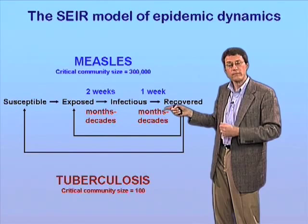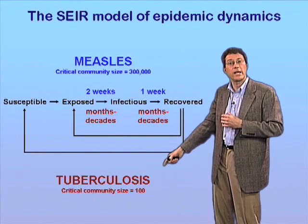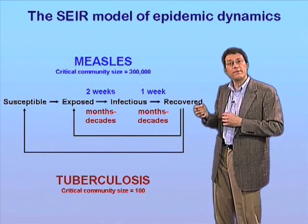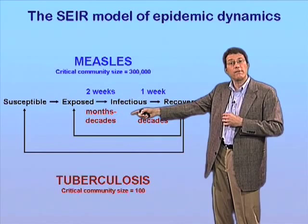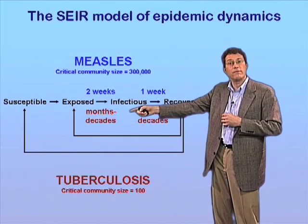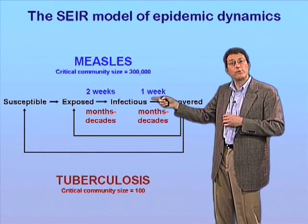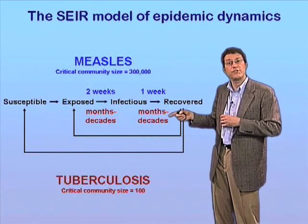In contrast, a persistent chronic infection like TB shows very different dynamics. When a susceptible individual becomes exposed to TB, the period of time between exposure and the development of infectiousness can last anything from months to decades. A latently infected individual can continue to harbor the pathogen for a lifetime. Furthermore, once an individual becomes infectious to others, that period can again last from months to decades before either death or recovery occurs.